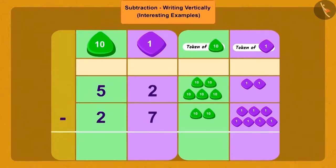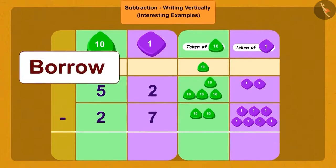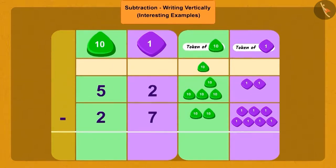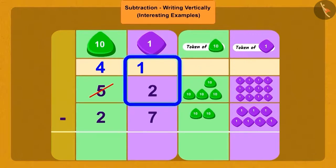Now, can we subtract 7 ones from 2 ones? Now, how will we do this? We will borrow 1 tens from 5 tens. Now, how do we write this? We will show it like this by striking off 5 tens and writing 4 tens in its place. And we will add 10 ones to 2 ones like this.